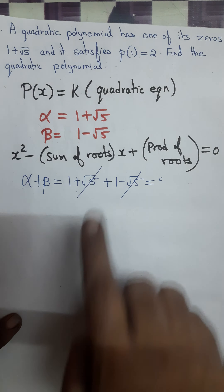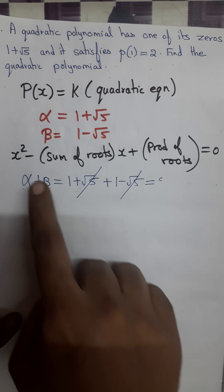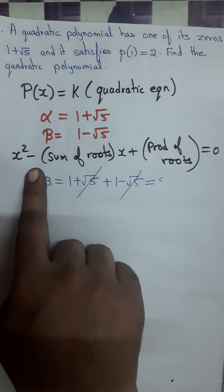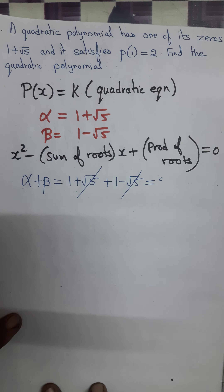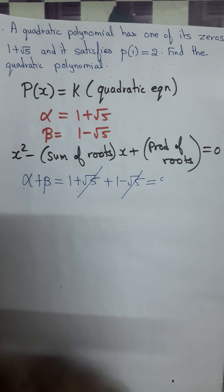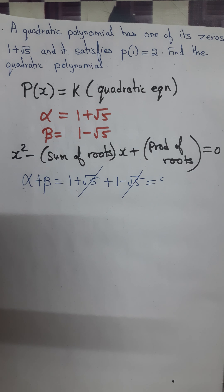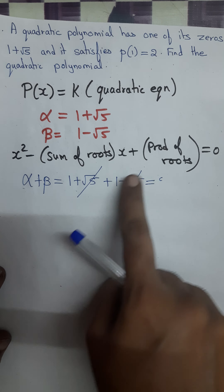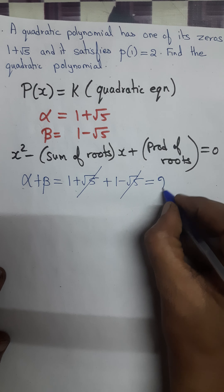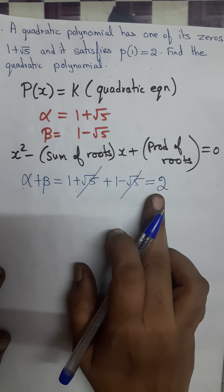Using alpha and beta, let me find the quadratic equation by the formula: x squared minus (sum of the roots) times x plus (product of the roots) equals 0. The sum of the roots, alpha plus beta, is (1 plus root 5) plus (1 minus root 5). The plus root 5 and minus root 5 cancel, giving 1 plus 1, which is 2. So sum of the roots is 2.